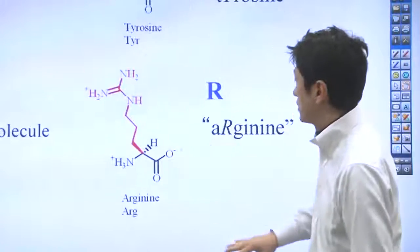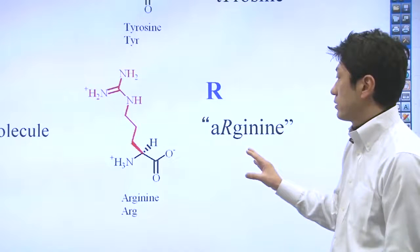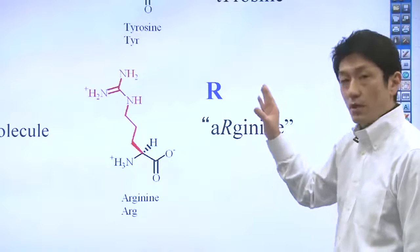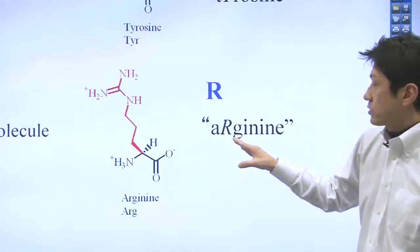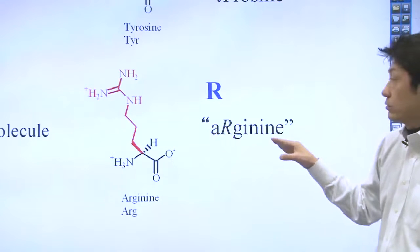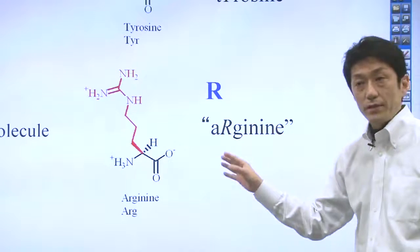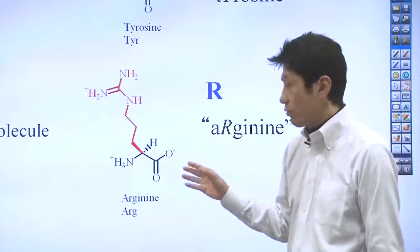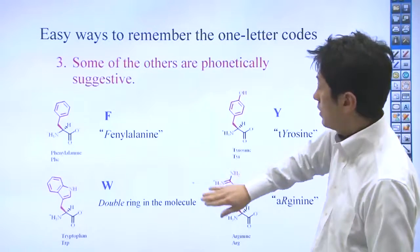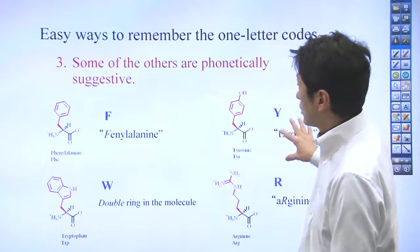Last one is arginine. Arginine is R because it's phonetically suggestive. Arginine. We use A for alanine. We can't use the A for arginine.